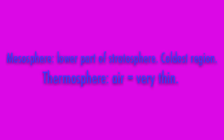And lastly, we have the mesosphere and the thermosphere. The mesosphere drops to about negative 100 degrees Celsius and it is the coldest region of the atmosphere. And finally, the thermosphere has very thin air and can reach up to 2,000 degrees Celsius or even more. It has a thin layer because the ultraviolet radiation is turned into heat.